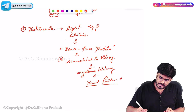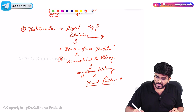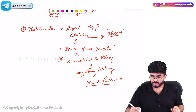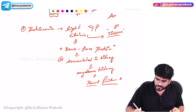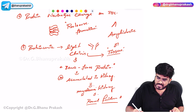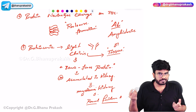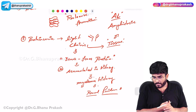These light chains — abnormal proteins — also start to accumulate in other tissues, leading to amyloidosis. That will lead to AL type of amyloidosis. Remember: L stands for light chain in AL amyloidosis.